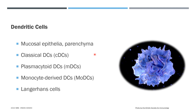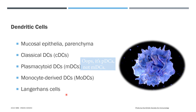There are at least four types of dendritic cells: classical DCs, found generally in epithelial tissues; plasmacytoid DCs, important for antiviral responses; monocyte-derived DCs, important in tissue inflammation; and Langerhans cells, which are important in skin infections.